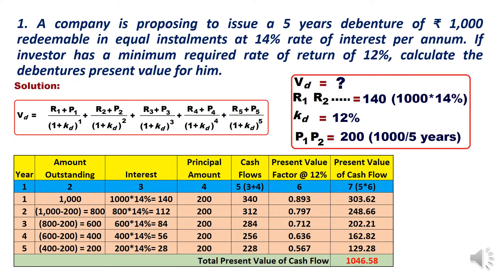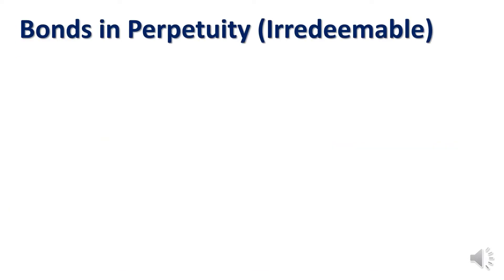The present value factors at 12 percent are taken from the present value table: 0.893, 0.797, 0.712, 0.636, and 0.567. You can get these from a PV table, a calculator, or by applying the mathematical formula directly. Multiply each cash flow (column 5) by the PV factor (column 6) to get column 7. Summing those values gives 1046.58 — this is the value of the bond redeemable in equal installments.